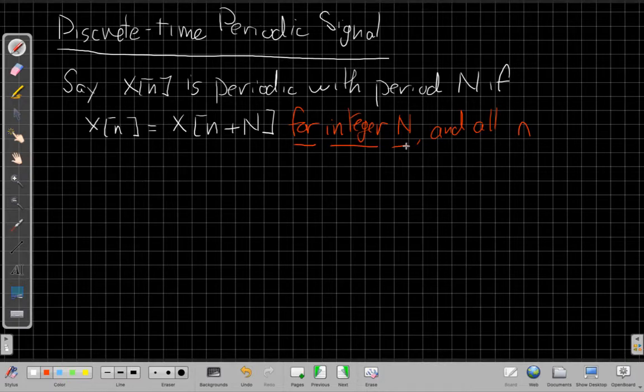This is very important. In continuous time, the signals you might have seen in circuits or physics, to be periodic the period doesn't have to be an integer. But because our discrete time signals are only defined for discrete integer values of the index, we need the period to be an integer.